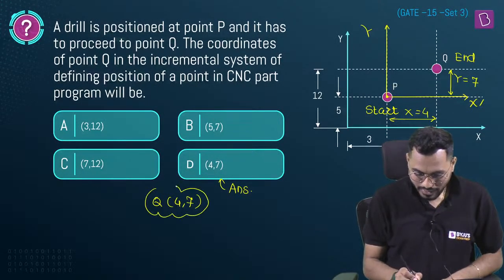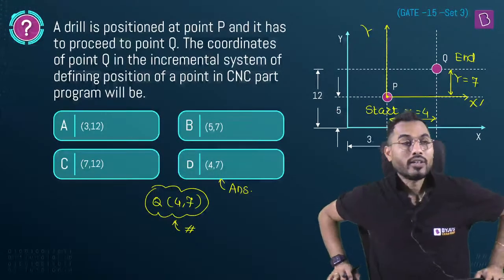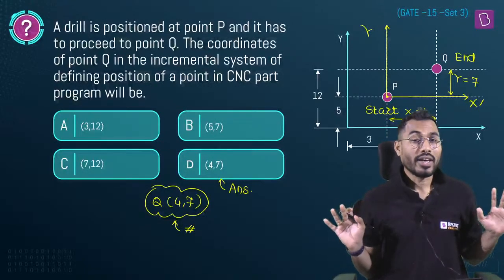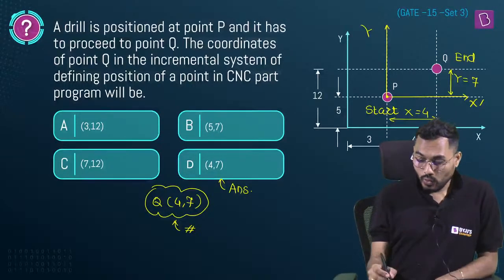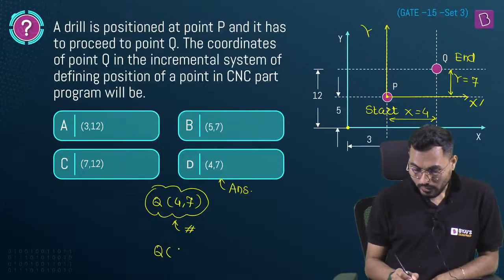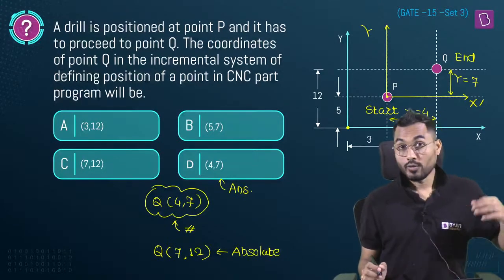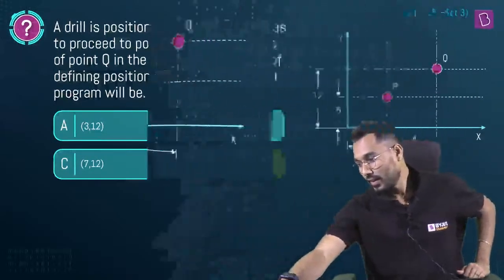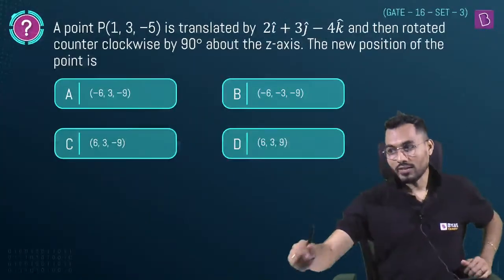The incremental coordinates of Q: x = 4, y = 12 - 5 = 7, giving Q = (4, 7). Answer is D. In absolute coordinate system, Q would be (7, 12). Incremental vs absolute is the key distinction here.